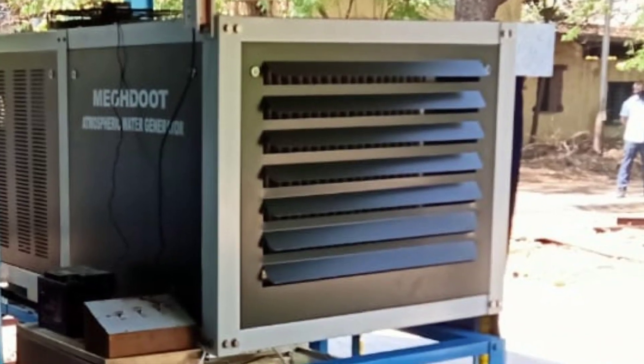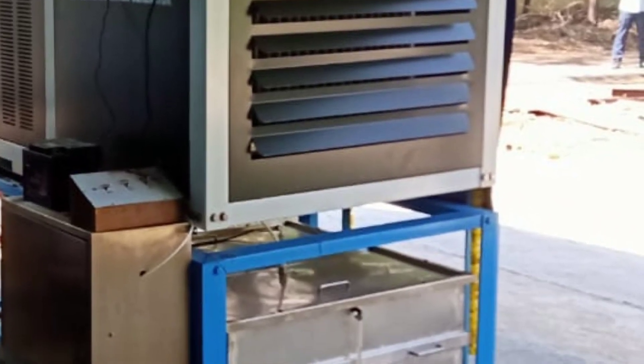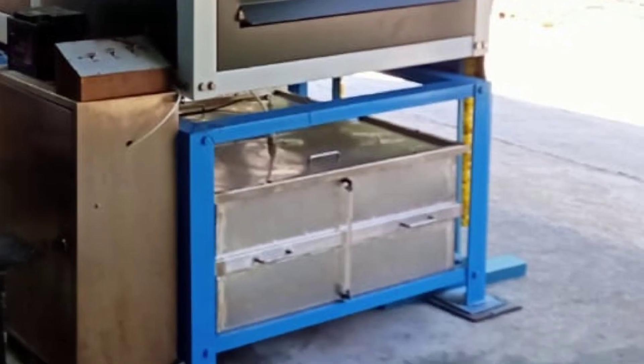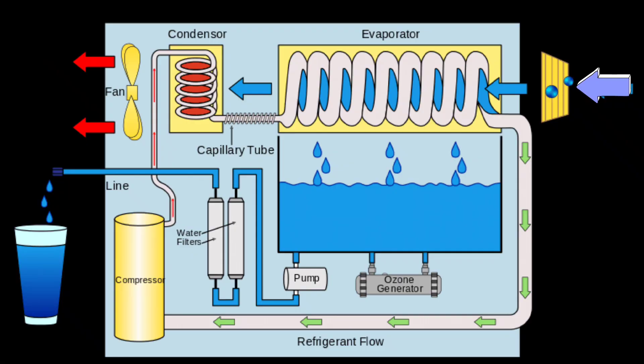AWGs use a combination of cooling and condensing techniques. First, air is drawn into the system. Then, it's cooled down to the point where the water vapour in the air condenses into droplets. These droplets are collected and filtered to ensure purity.